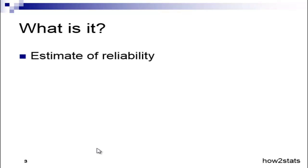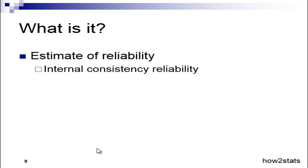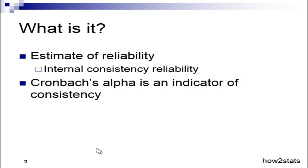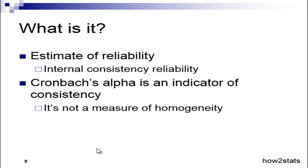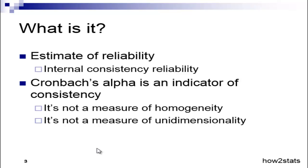So what is it exactly? It's an estimate of reliability, and very specifically an estimate of internal consistency reliability. If you had to think of one word in the context of Cronbach's alpha, it's consistency. All reliability estimates are estimates of consistency, arguably — that's the most fundamental way of thinking about it. I'll show you an example in a few slides what that means exactly. It's not a measure of homogeneity, and it's not a measure of unidimensionality.